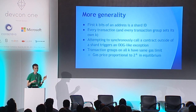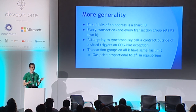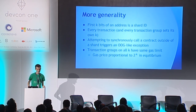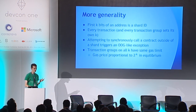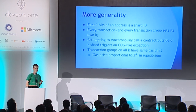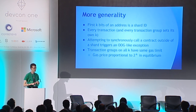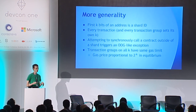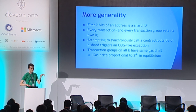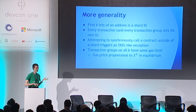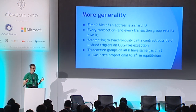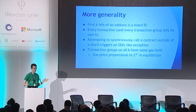If a transaction sets k to 13, and one contract tries to call another contract where one of the first 13 bits is different, that triggers an out-of-gas exception. The key economic point is that transaction groups at any value of k have the same gas limit. So if you're creating a top-level block, you could get one transaction group at k equals zero, or 32 transaction groups at k equals five, or 65,536 transaction groups at k equals 16.